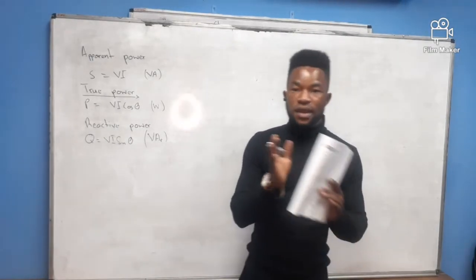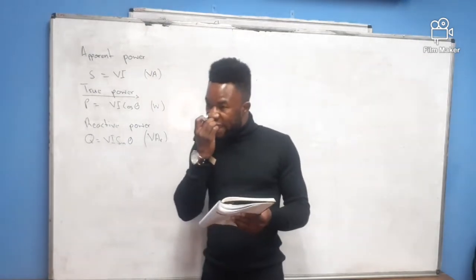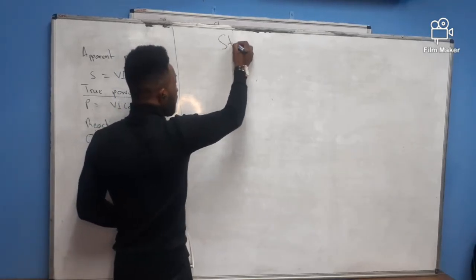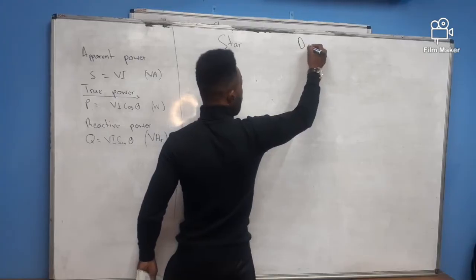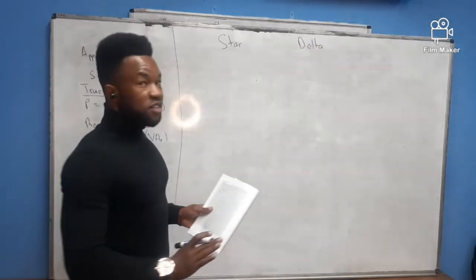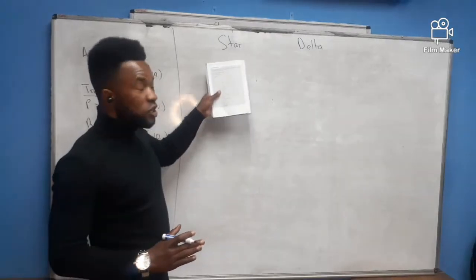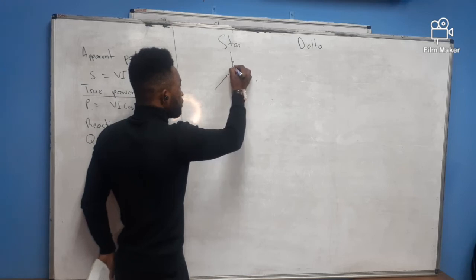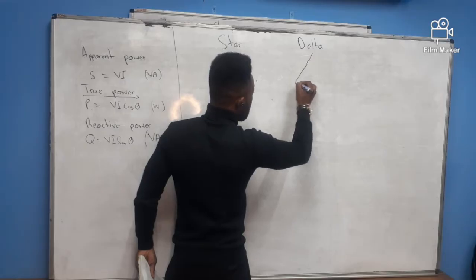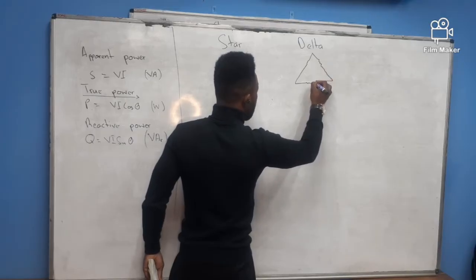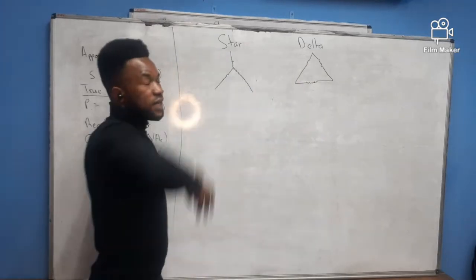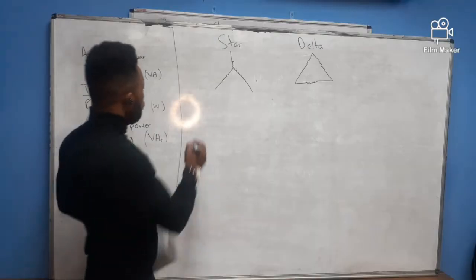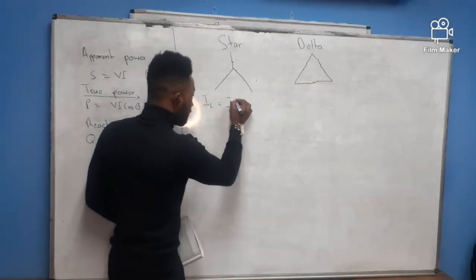On a transformer, it can be single-phase or three-phase. On a three-phase transformer, the winding can be connected in star or delta. On a star connection, the line current equals the phase current (IL = Iph), but the line voltage equals root-three times the phase voltage (VL = √3 × Vph).